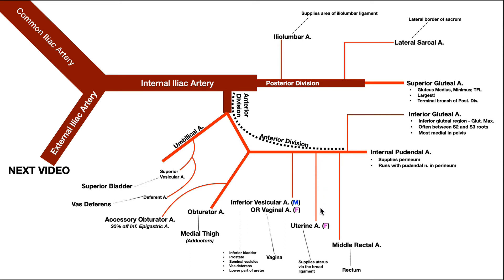The next branch is the uterine artery, which is only in females. It supplies the uterus via the broad ligament — the uterine artery travels within that ligament to reach the uterus. After that is the middle rectal artery, which supplies the rectum, part of the digestive system.